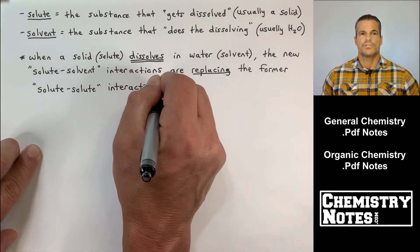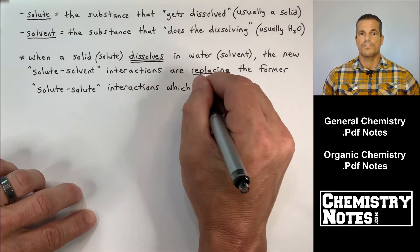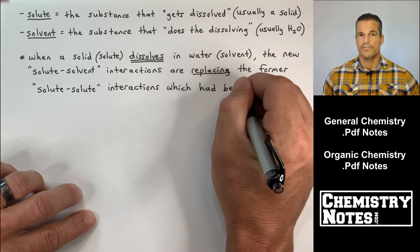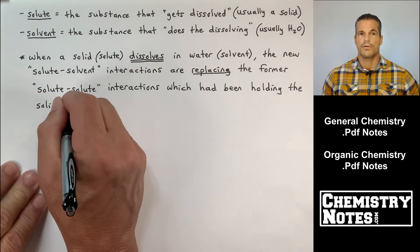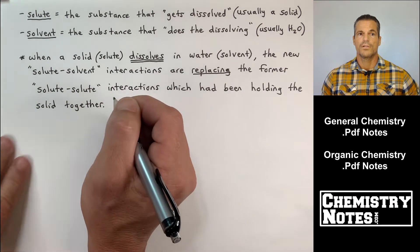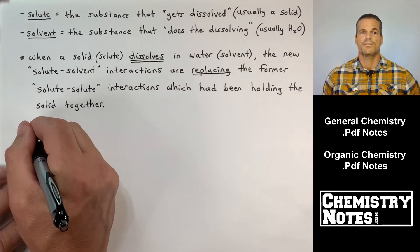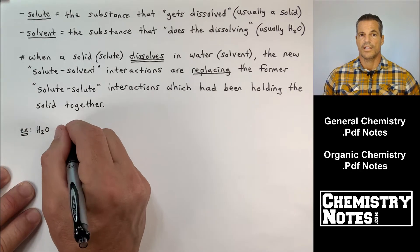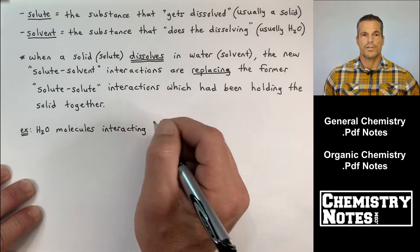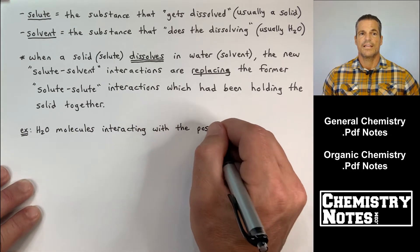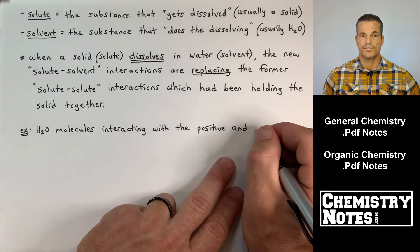So it says again when a solid or solute dissolves in water, water being our solvent, the new solute-solvent interactions are replacing the former solute-solute interactions which have been holding the solid together. As an example, H2O molecules interacting with the positive and negative ions of a salt.